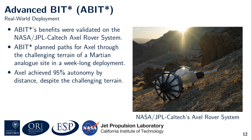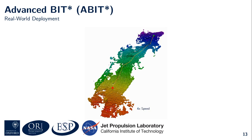The benefits of A-BIT* were demonstrated in the real world on the NASA JPL Axel Rover system. Axel is a next-generation rover specialized for challenging terrain and steep slopes. A-BIT* was used to plan paths for Axel through the rough landscapes of a Martian analog site during a week-long field test in the Mojave Desert in California. Planning for Axel is difficult because edge evaluations are computationally expensive, as they include settling every state along an edge onto the terrain to check for collision with the main body. Despite this and despite the challenging terrain, A-BIT* helped Axel achieve 95% autonomy by distance in its autonomy test. This video shows A-BIT* finding a path for Axel down a steep slope, where the start and goal states are about 30 meters apart. Once again, A-BIT* finds an initial solution quickly and then asymptotically converges towards the optimal solution in an anytime manner.